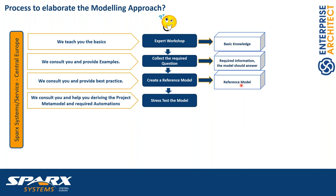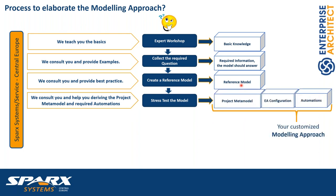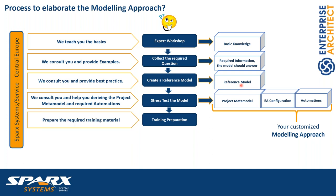If they are successful, we have found our modeling approach. If there is a problem answering questions or maintaining the model, we can add customizations, configurations, and automations. We can support you in deriving the project meta model from the reference model — defining the rules and guidelines, all the meta model configurations in Enterprise Architect, and any required automations. That is the result of your modeling approach. Based on it, we can then prepare a customized training.